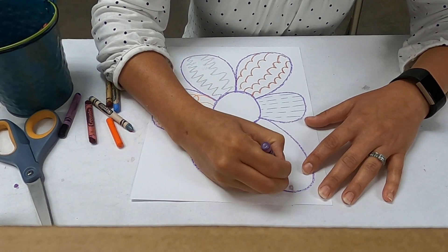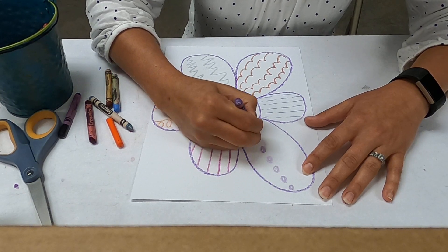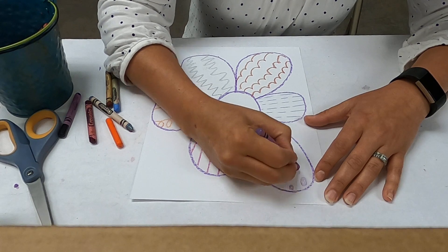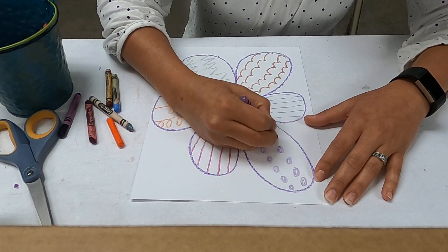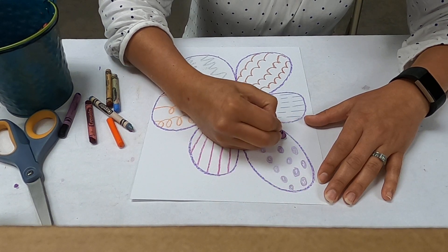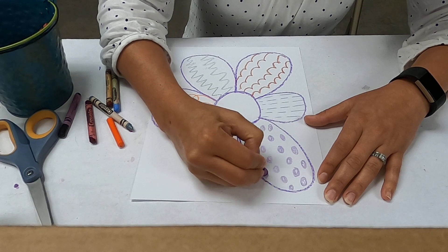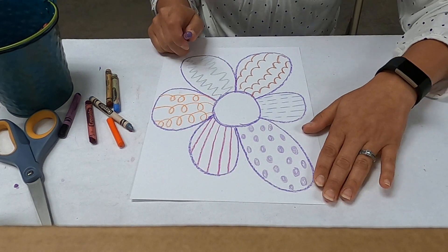So dotted line, just like it sounds, it's a line but it's a line with dots. It doesn't have to be a perfect line, doesn't have to be a perfect dot. So we're just practicing different types of lines and what they look like.